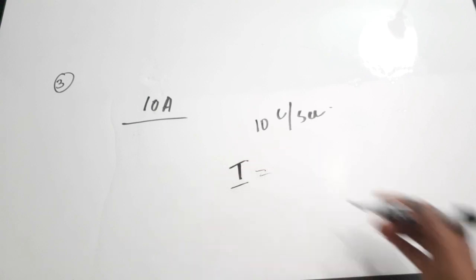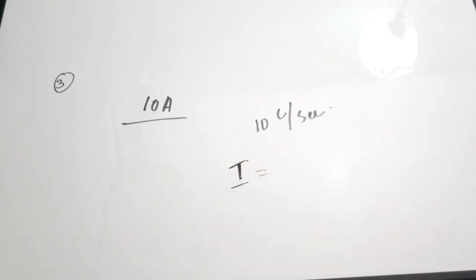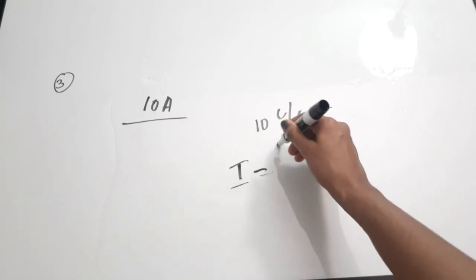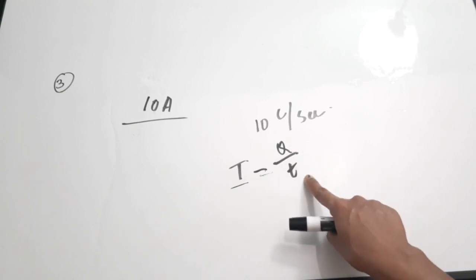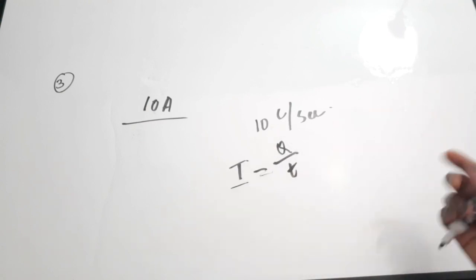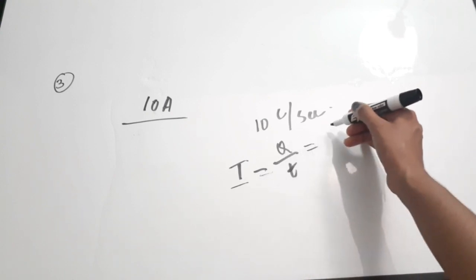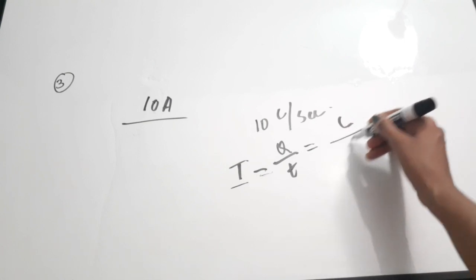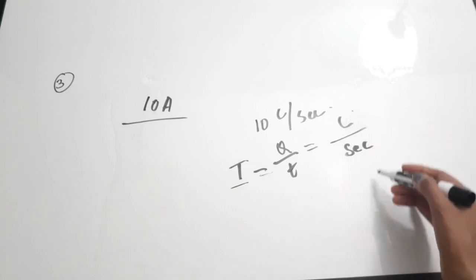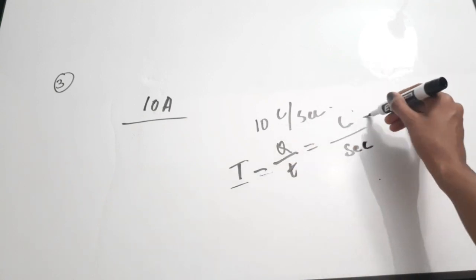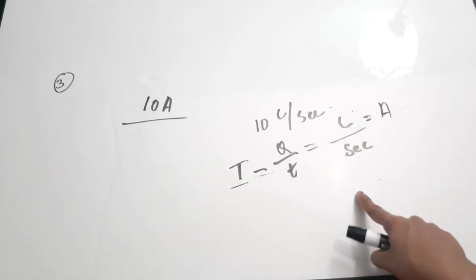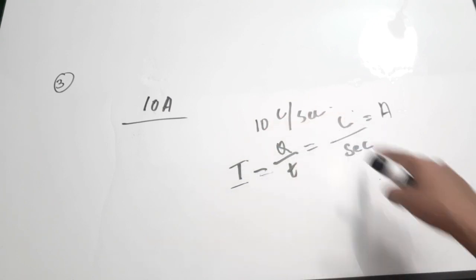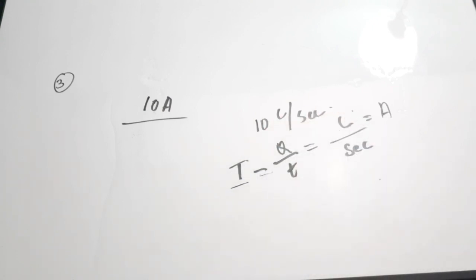How is this derived? From the very initial definition of current, we have studied that current is the rate of flow of charge: I = Q/T, where Q is charge in Coulombs and T is time in seconds. So the unit is Coulombs per second, which equals Ampere. Therefore, we can replace 10 Ampere with 10 Coulomb per second. The correct answer is option C.